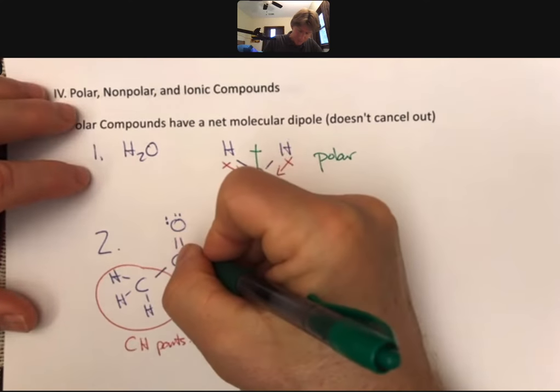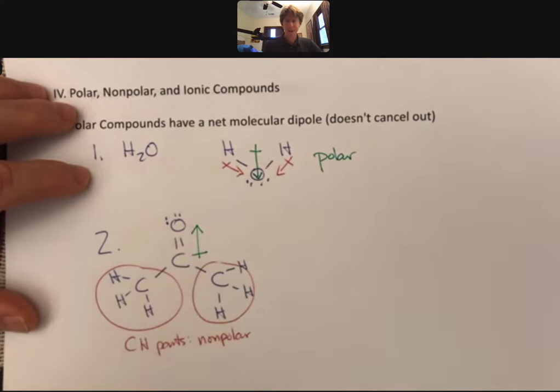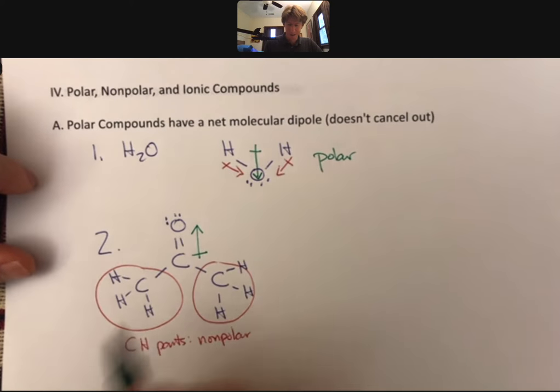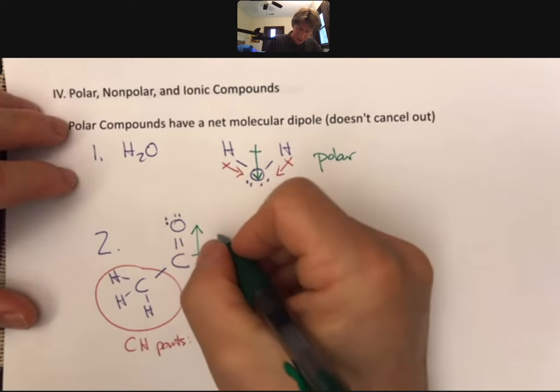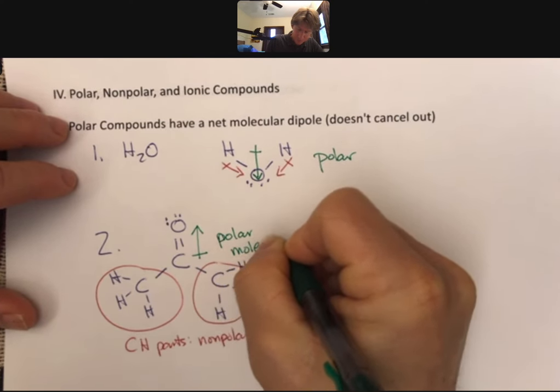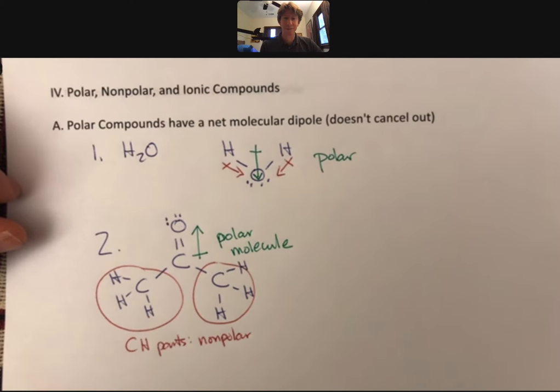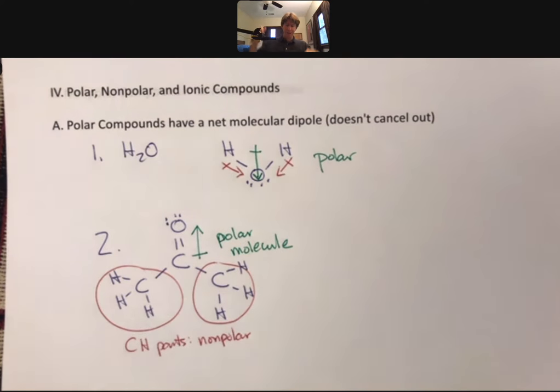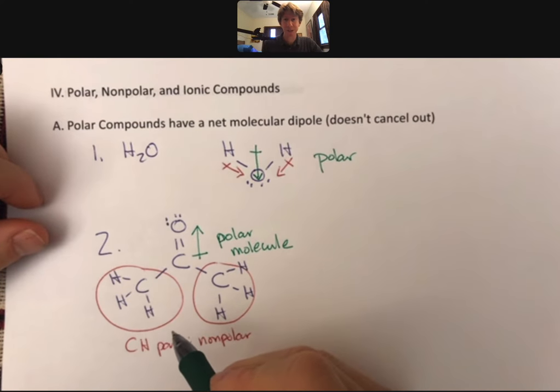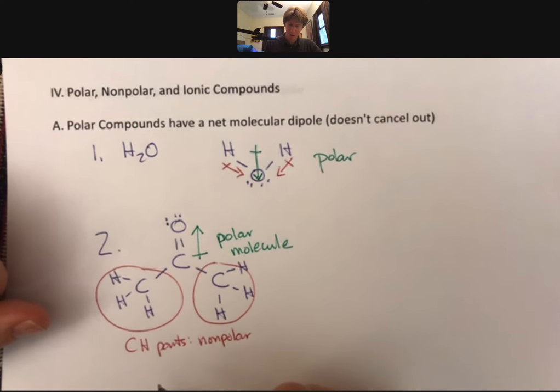However, we have this part, and oxygens will tend to make things polar, there's a dipole right there, and that is going to make this a polar molecule because that dipole does not cancel out. Now these parts, they are actually moving around, so it's not clear how they cancel out, but they do, and that's what we need to remember. So that's another example of a polar compound.